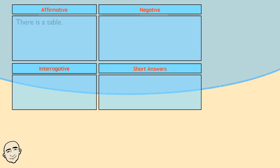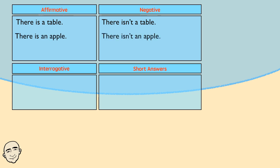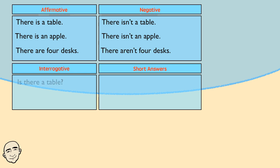Affirmative: There is a table. Negative: There isn't a table. There is an apple. There isn't an apple. There are four desks. There aren't four desks.